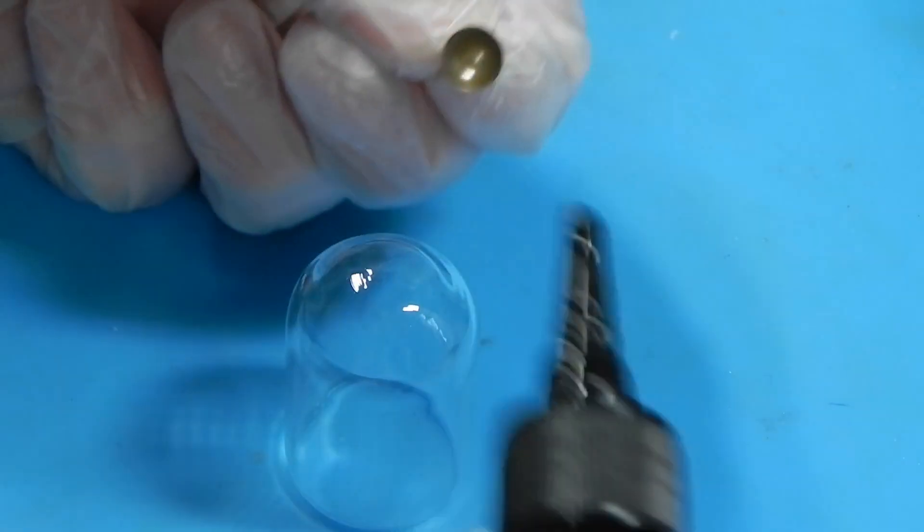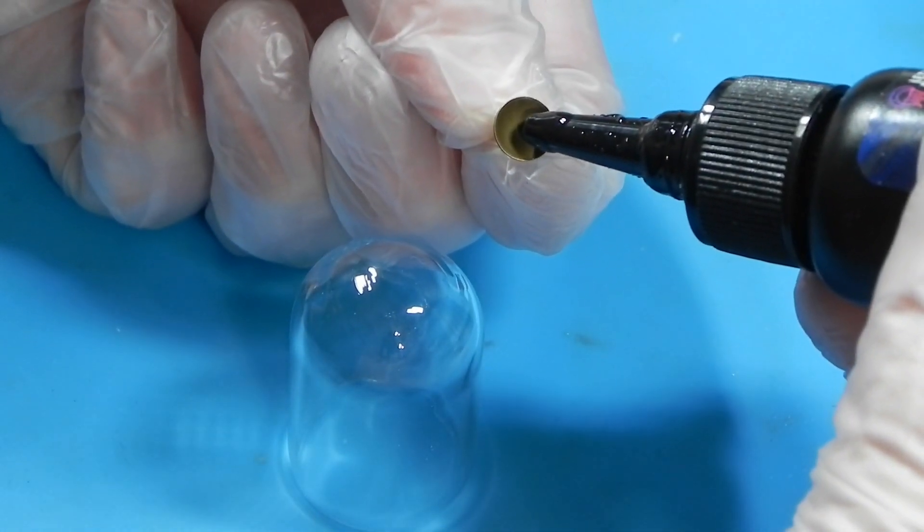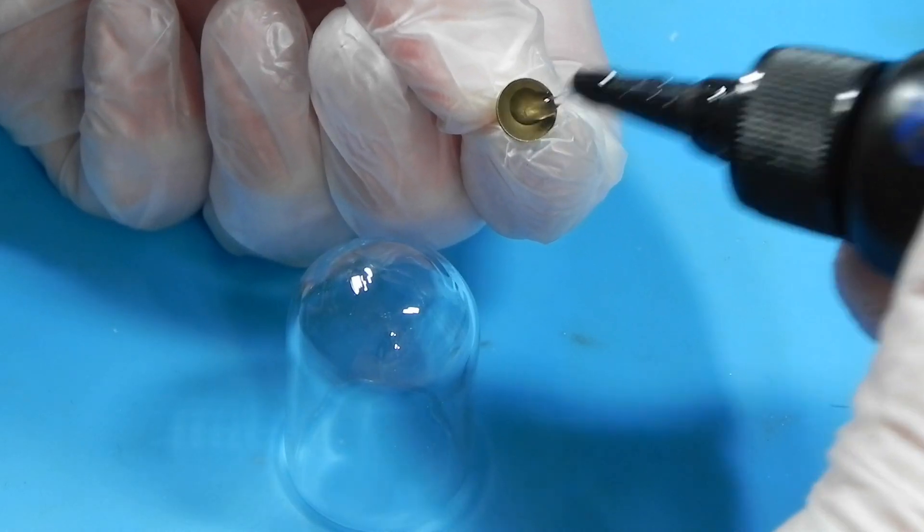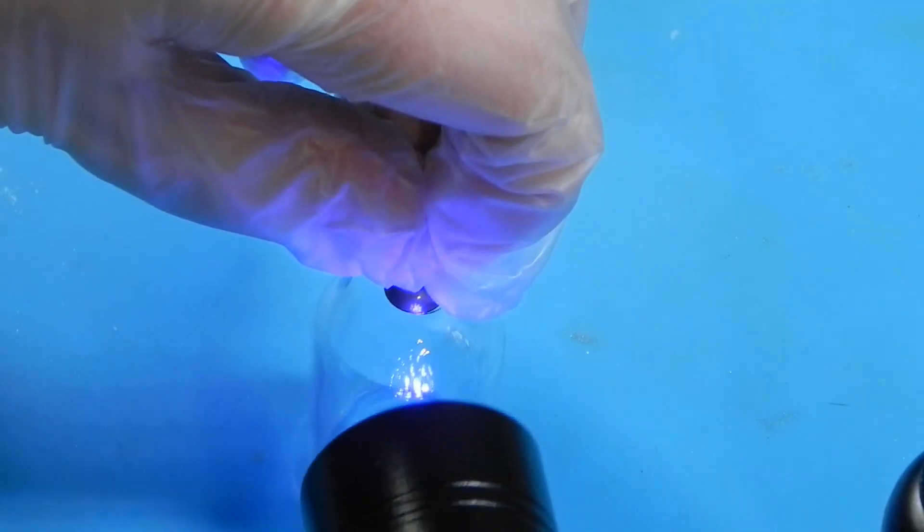One of the first things we're going to do is attach the little ring to the top of the doll dome. I'm using a little bit of bonding resin and my little UV torch.